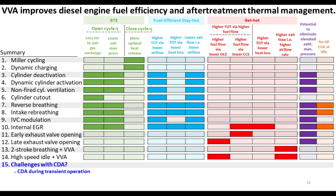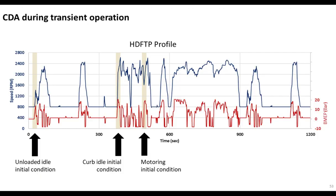Some of the challenges we extensively looked at — what people were concerned about around CDA. I'm going to talk about a few and allude to the others; some were covered in other webinars and all are covered in publications. Let me talk briefly about CDA during transient operations. This is all about, for instance, over a representative drive cycle like the heavy-duty FTP — if at idle and at low loads we're in CDA, can we meet the torque demand as we move out of CDA into conventional six-cylinder operation? The short answer is yes.